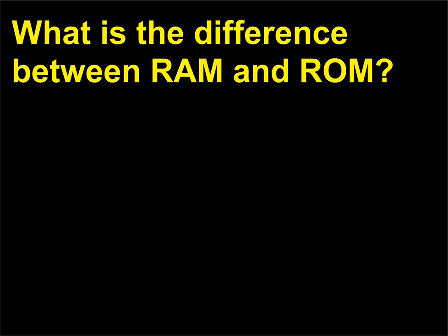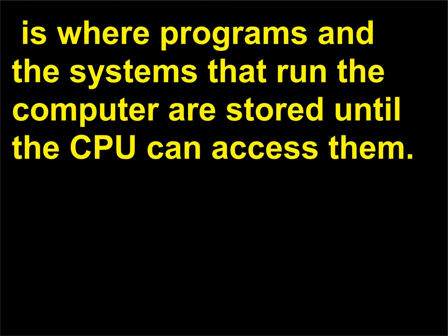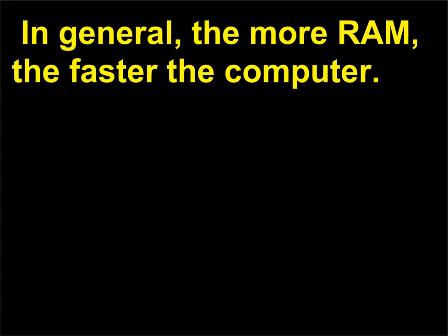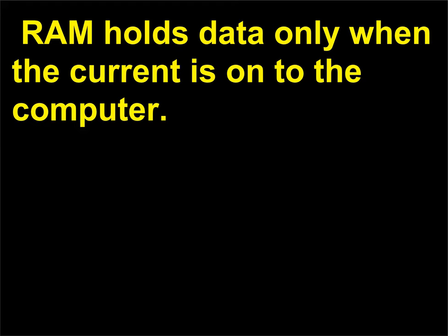What is the difference between RAM and ROM? Random access memory, RAM, is where programs and the systems that run the computer are stored until the CPU can access them. RAM may be read and altered by the user. In general, the more RAM, the faster the computer. RAM holds data only when current is on to the computer.